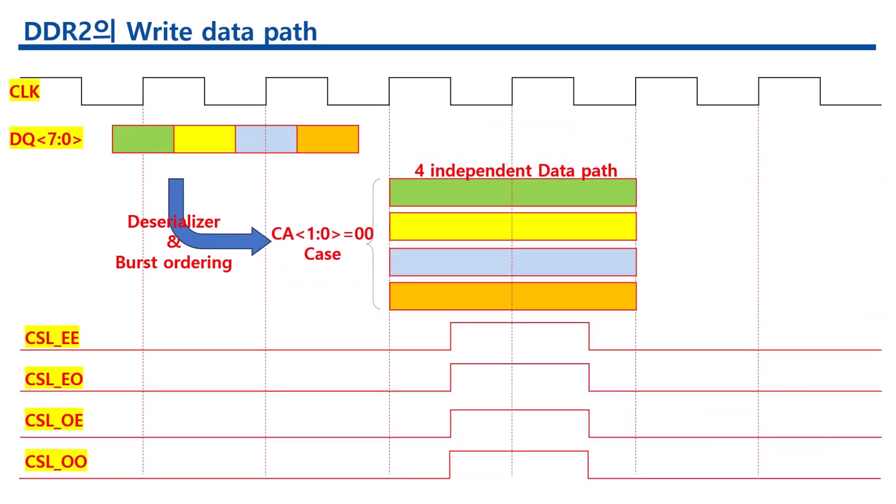Similar to DDR1, DDR2 also transfers data at twice the clock speed, transferring data on the rising and falling edges of the clock signal. Also, the internal clock runs at half the speed of the data bus, leading to higher bus speed and lower power. All the above factors help DDR2-SDRAM to achieve four data transfers per internal clock cycle. The prefetch buffer of DDR2 is 4-bit, which is double of DDR-SDRAM. The data rate of DDR2 is 400 Mbps to 800 Mbps.